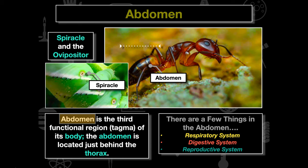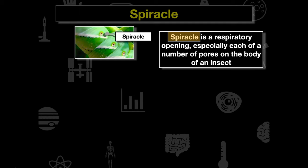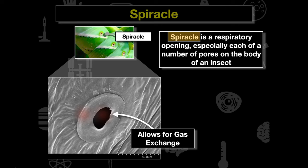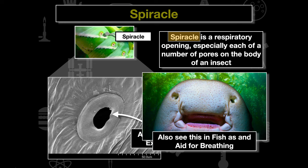The spiracle is a respiratory opening — a number of pores running along the abdomen. If we zoom in on one, it would look like this. It allows the insect to perform gas exchange: carbon dioxide leaves the insect, and oxygen moves into the insect's mitochondria.